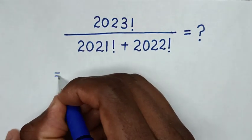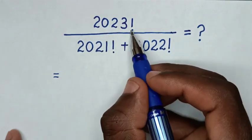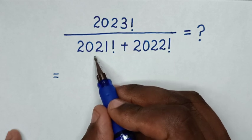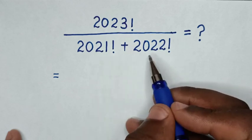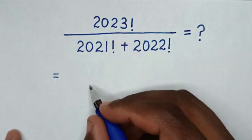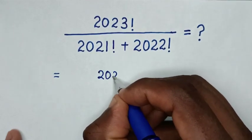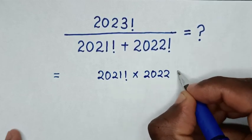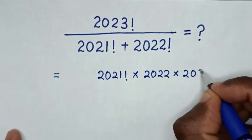So it will be equal to - from this 2023 factorial, to have common 2021 factorial, which is the lowest between this and this, then this 2023 factorial is the same as 2021 factorial times 2022 times 2023.